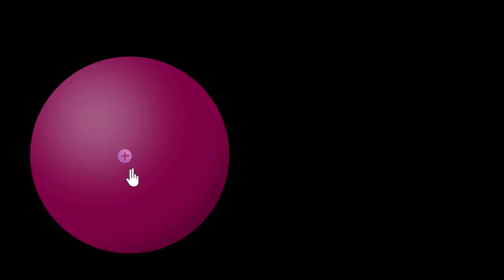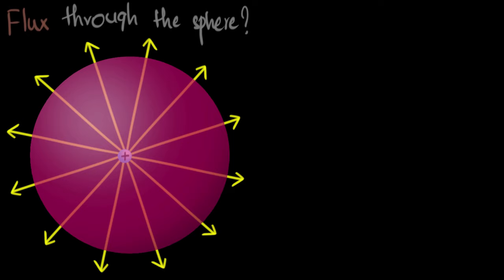So let's imagine a situation. Let's say we have a sphere at the center of which we have kept a positive charge. So that charge is going to create this nice little electric field everywhere, right? Now the question we want to try and answer is what would be the flux through this sphere? What is the electric flux through the sphere? How do we calculate that?